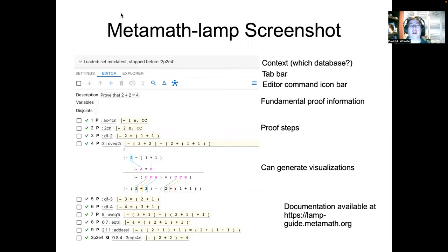Here's a screenshot of what it looks like when you're using MetaMath Lamp. I'm just going to talk briefly from top to bottom. At the top, you'll notice a little loaded statement — basically, that tells us our context: what database are we using? Are we using SetMM, which is based on classical logic and set theory? Are we using ISETMM, which is intuitionistic logic? Maybe we're using HOL, or new foundations — this will tell us the database we're using.